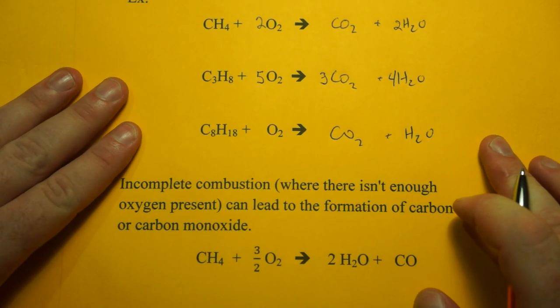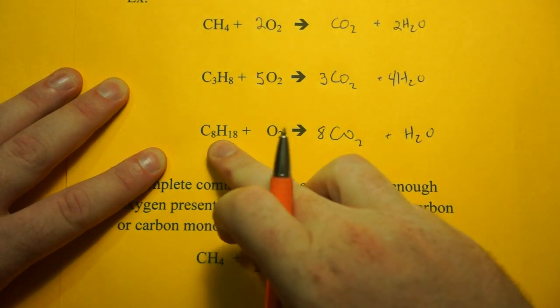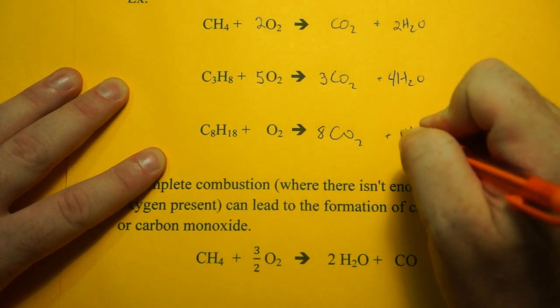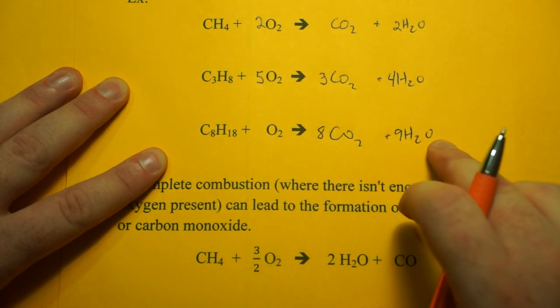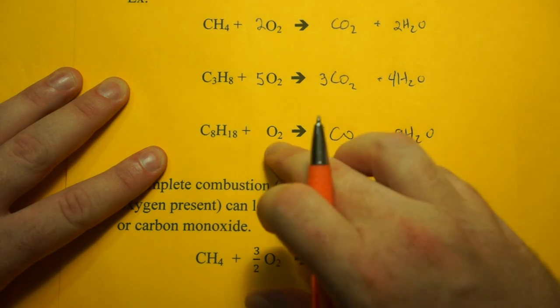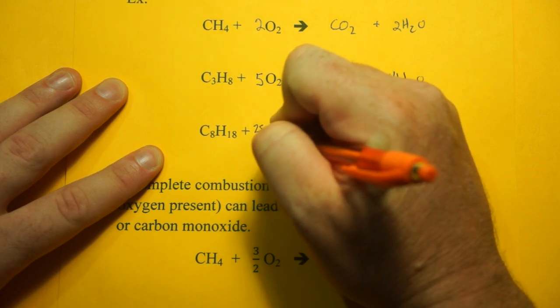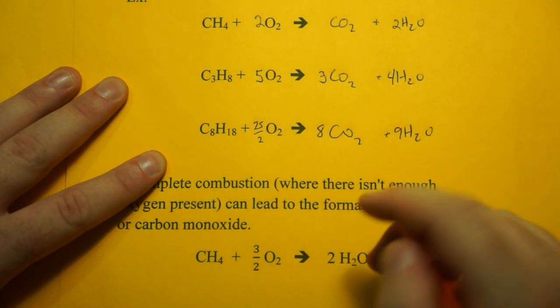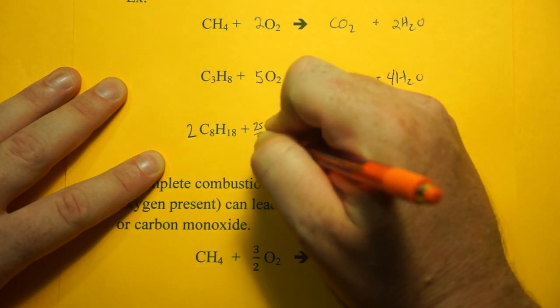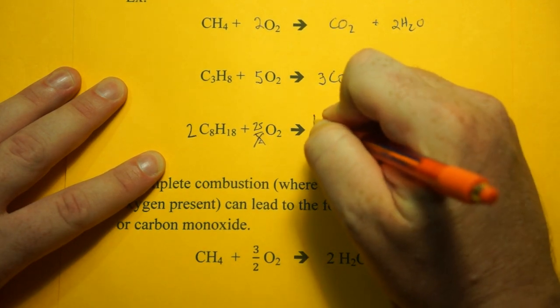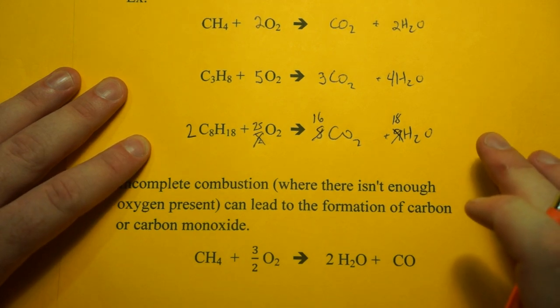And here's the tough one. Octane. So same rules apply. Carbons form carbon dioxide. We have eight. And eighteen hydrogens, meaning we get nine waters. Now, eight times two is sixteen, plus nine is twenty-five. Wait a minute, these come in pairs. So that means we need twenty-five halves. If we're going to clean this up, we're going to just double everything. So it's going to be two, twenty-five, sixteen, and eighteen. And that's how you balance the octane one.